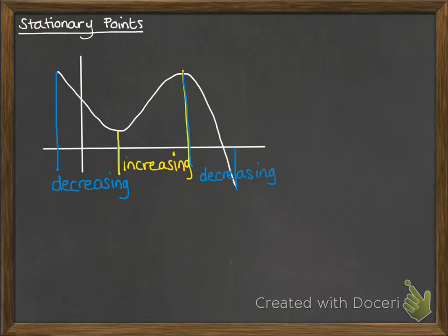So in the increasing parts the gradient is positive and the decreasing parts it's negative to tell you whether the graph is going up or down. So when we talk about increasing and decreasing functions we're talking about when they're going up or when they're going down.